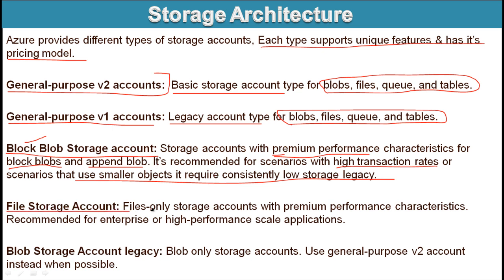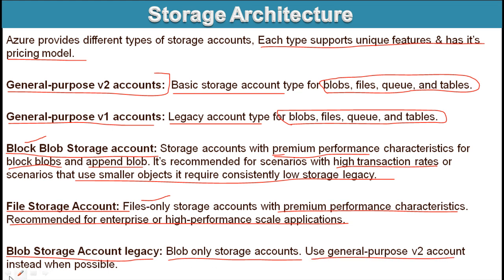Next is the File Storage account, which stores files with premium performance characteristics and is recommended for enterprise or high-performance scale applications — this is what organizations typically use. The last is the Blob Storage account, which is a legacy blob-only store; in real time we use General Purpose V2 instead. Each of these has its own pricing mechanism.